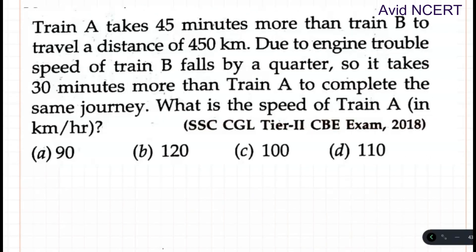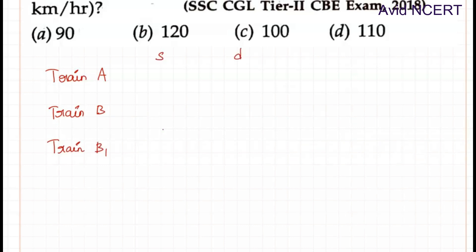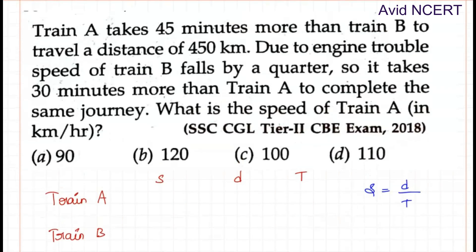From the first sentence, train A takes 45 minutes more than train B. Let's call them train B and train B1 after the engine failure. We know speed, distance, and time, and the formula is speed equals distance divided by time.